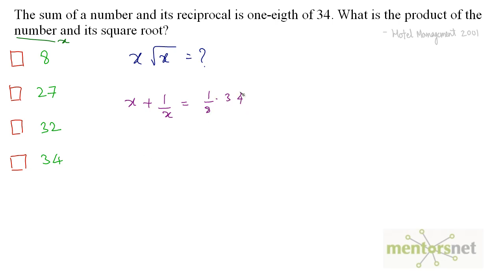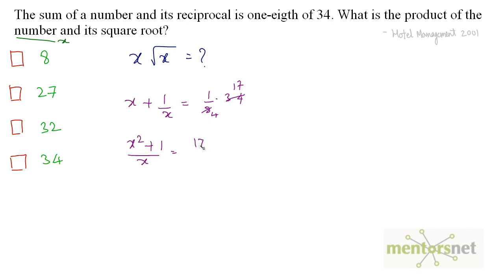We can solve this for x and get the value of x. On the left hand side, we can write x squared plus 1 by x. We can reduce this — 2 times 4 is 8 and 2 times 17 is 34 — so this equals 17 by 4.